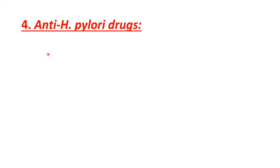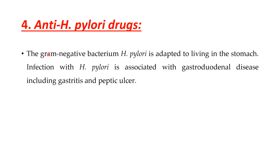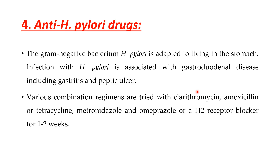The last class is anti-H. pylori drugs. H. pylori is a gram-negative bacterium adapted to living in the stomach. Infection with H. pylori is associated with gastroduodenal disease including gastritis and peptic ulcer. Various combination regimens are tried with clarithromycin, amoxicillin or tetracycline, metronidazole, omeprazole, and H2-receptor blockers for 1–2 weeks for the treatment of H. pylori infection that ultimately leads to peptic ulcer. This concludes the discussion on anti-ulcer drugs.